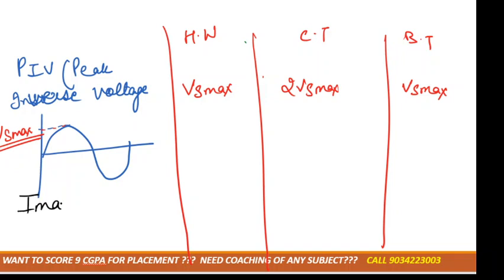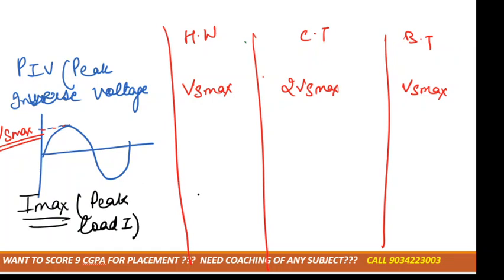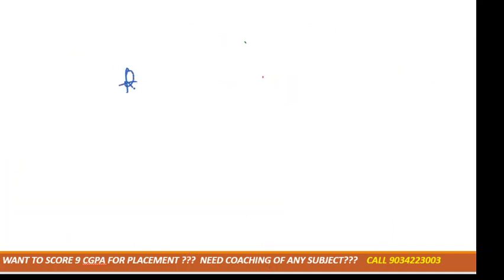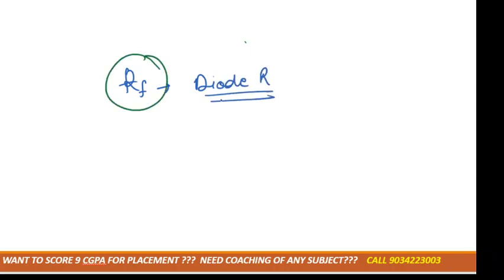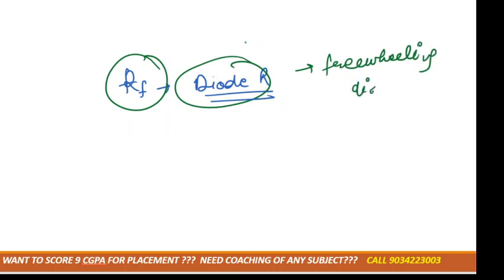Next is Imax, the maximum current, also called the peak load current. The formula is based on Ohm's law: I = V/R. So Imax equals VS max divided by RL plus RF. Here RF is the diode resistance — we generally call it the freewheeling diode resistance, not a normal diode.